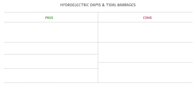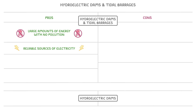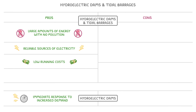The last thing we need to cover are the pros and cons of each type. In both cases, we can generate large amounts of energy with no pollution. They're also very reliable sources of electricity. Hydroelectric dams, in particular, can provide an immediate response to an increased demand. Another benefit of both methods is that the running costs are fairly low, and they can work on both large and small scales.